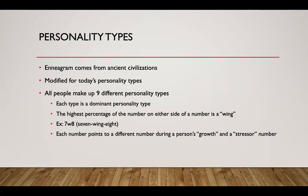Each type, each number that a person has, is a dominant personality type, but with that you have wings. The number on either side can potentially be your wing, and your wing is what refines your personality - it gives a little more detail than just a straight number. For example, seven wing eight means you are an enthusiast, a number seven, but you also have dominant characteristics.